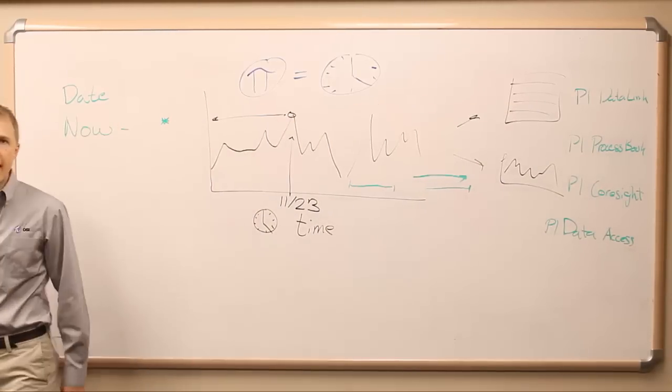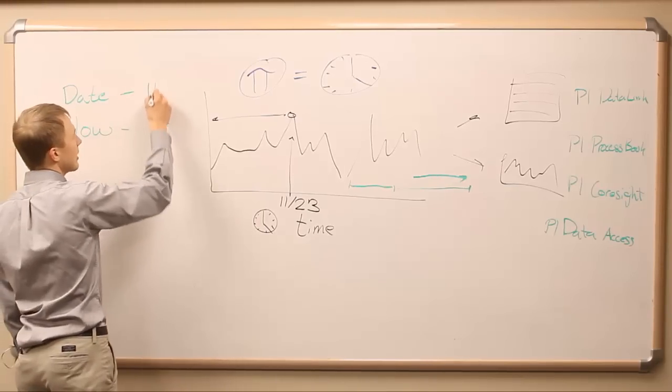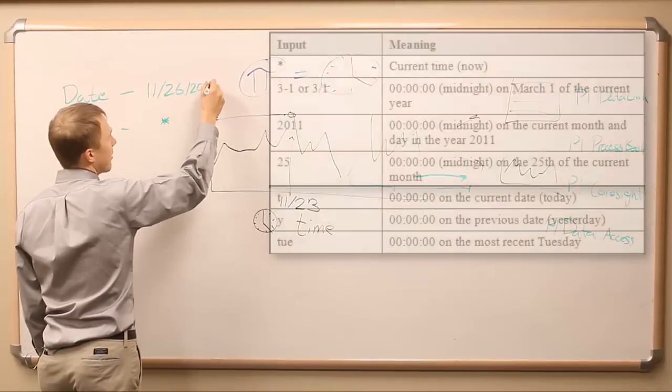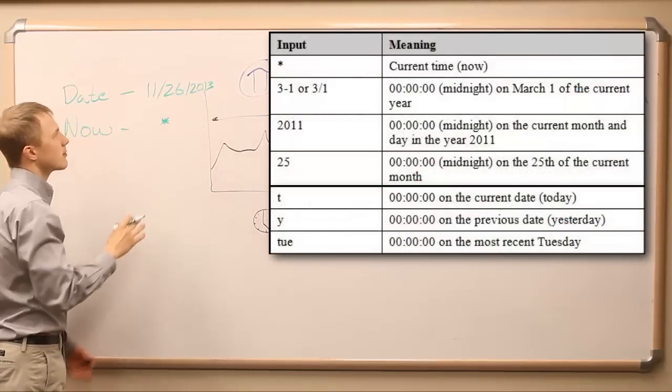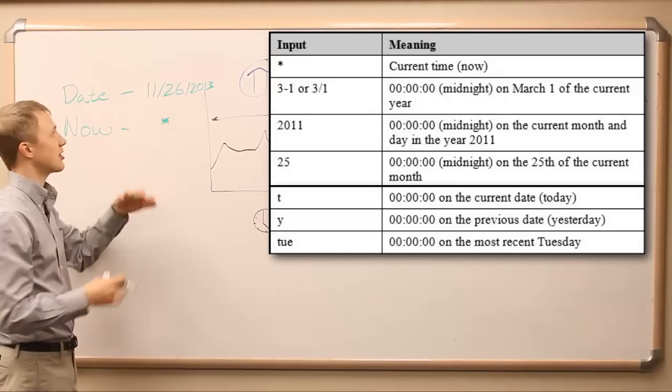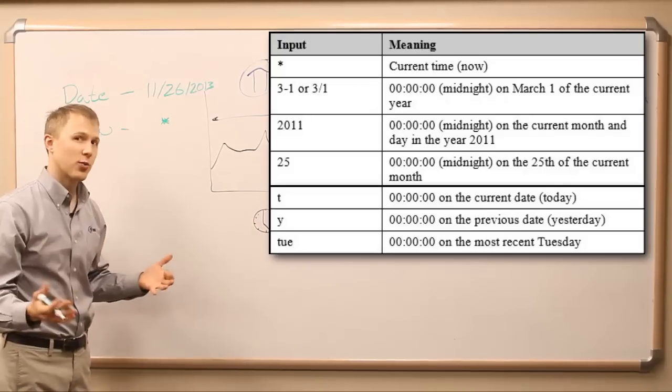We can also use things like dates. And a wide variety of date formats are recognized. Well, particular date formats are recognized, but you'll find that it's flexible enough to not be annoying. Like you can put in certain fragments of a date and the PI System will still be able to recognize it and work with it.